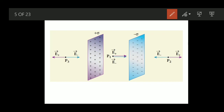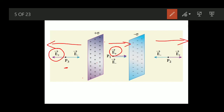Let us take first the point P3. Due to the positively charged plate, the electric field acts outward — in this direction at P3, and similarly at other points. At point P1, the electric field due to the positive charge is towards the right side, the positive x-axis. So these three are the directions of the electric field due to the positive plate, shown with the violet color arrows.